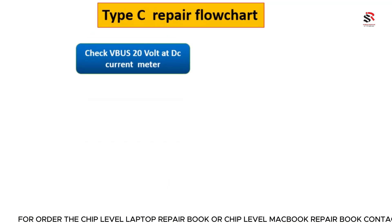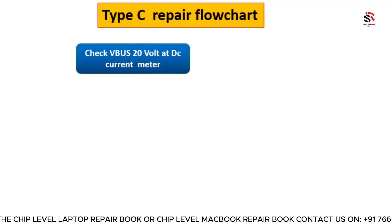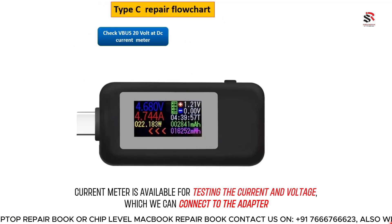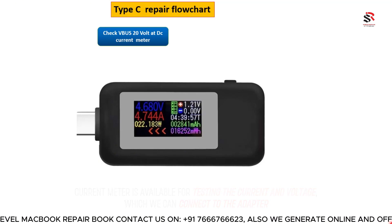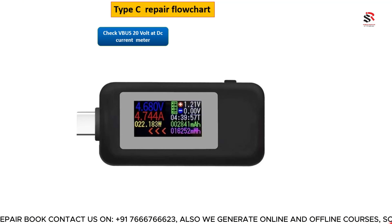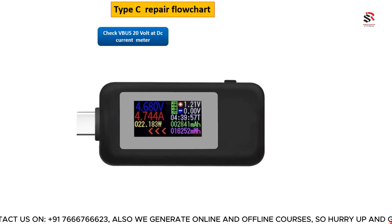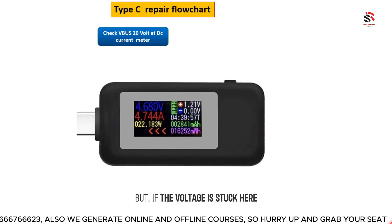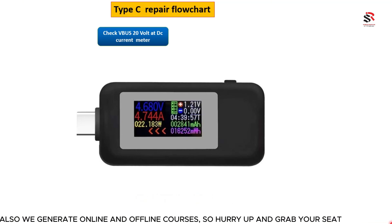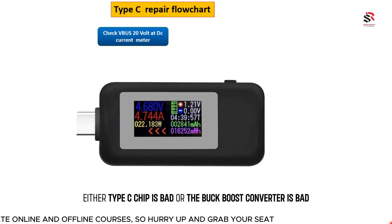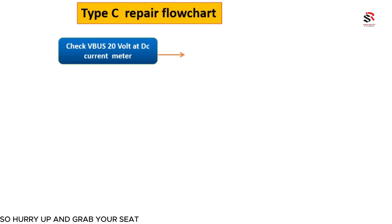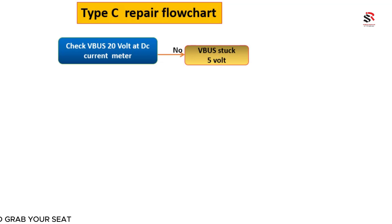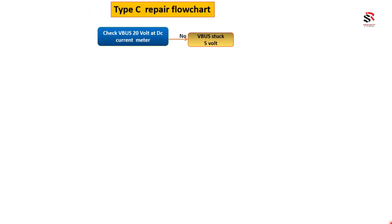The first thing to do is check for 20 volts on the current meter — a meter available for testing voltage and current, which we connect to the adapter. If the 20 volt reading is okay, we proceed down the flowchart. But if the voltage is stuck at 5 volts instead of 20, that indicates a problem.